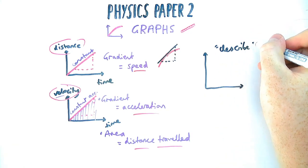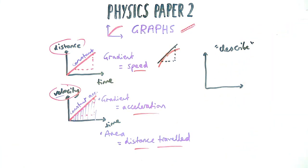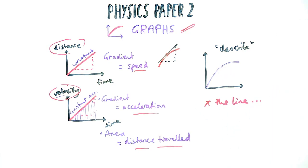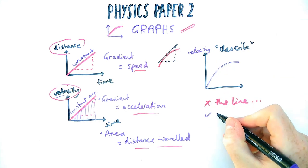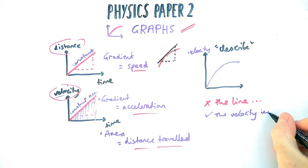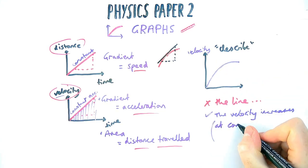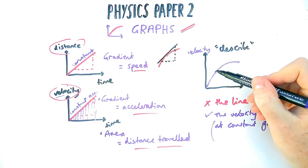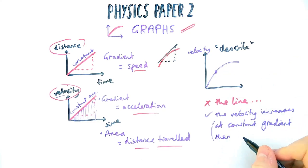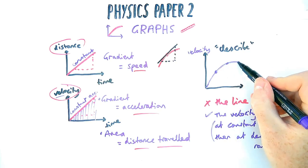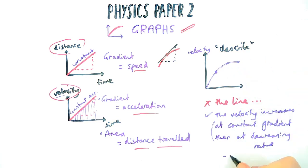There's also likely to be some graph questions where you need to describe a graph. Please avoid saying things like 'the line does this' or 'the graph does that.' Mention what's on the y-axis — in this example it's the velocity — that would increase at a constant rate initially where it's straight, then increase at a decreasing rate until it reaches a constant speed.